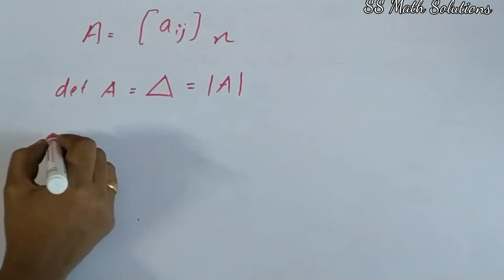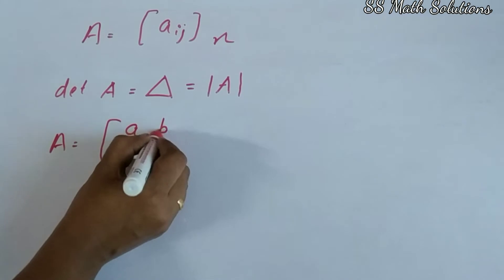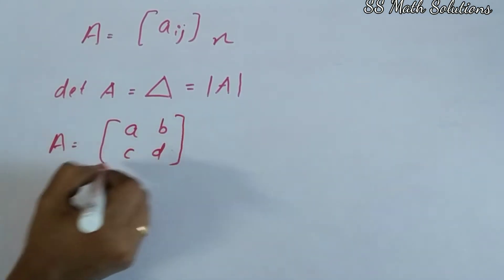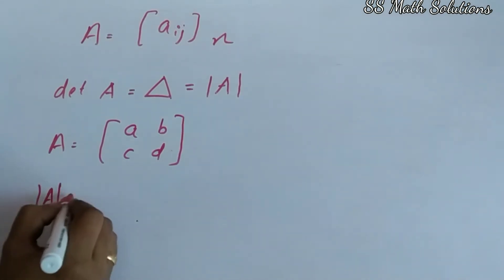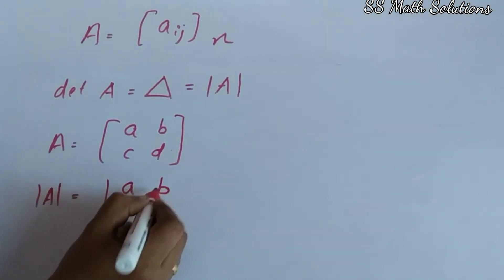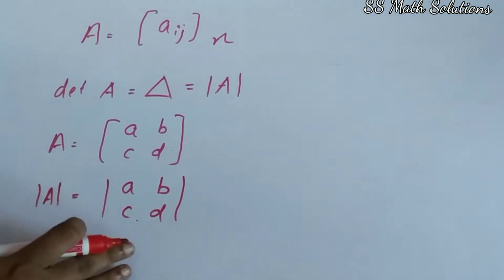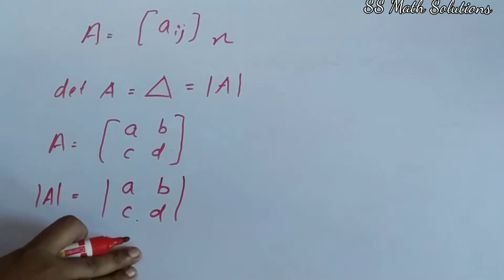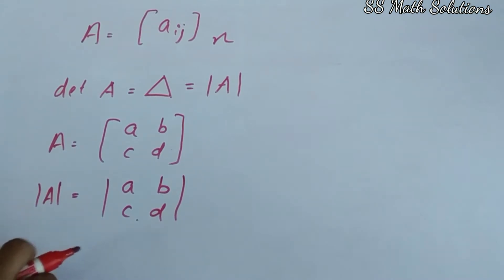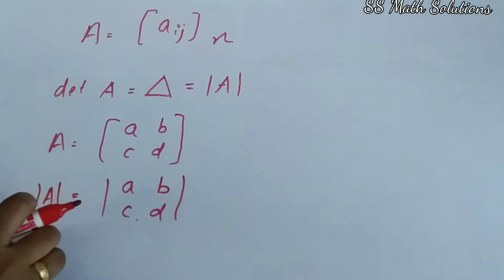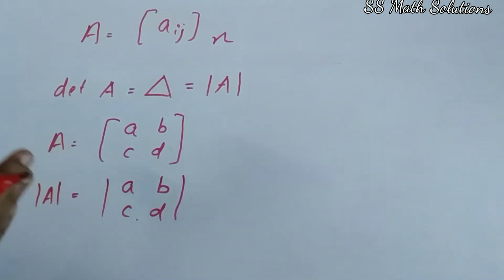So if you get a question where A is equal to the matrix [A, B; C, D], a square matrix, how will we write the determinant? Determinant of A is equal to the determinant of [A, B; C, D], represented this way. We should remember: only square matrices have a determinant. After calculating the determinant, you will get a number that is either real or complex.